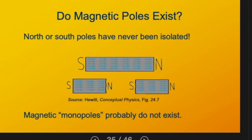So probably magnetic monopoles don't exist. Can't say that with 100% certainty, but as far as we know, there is no such thing as a monopole—a magnetic north pole by itself or a magnetic south pole by itself.